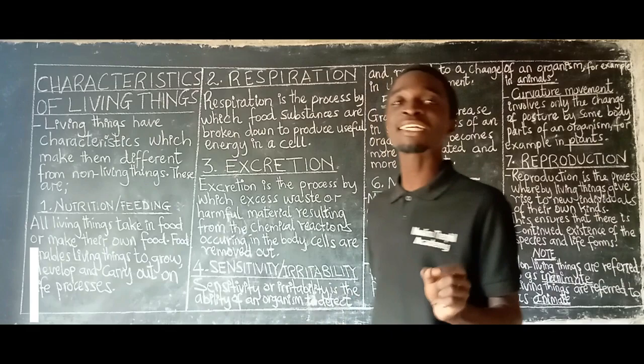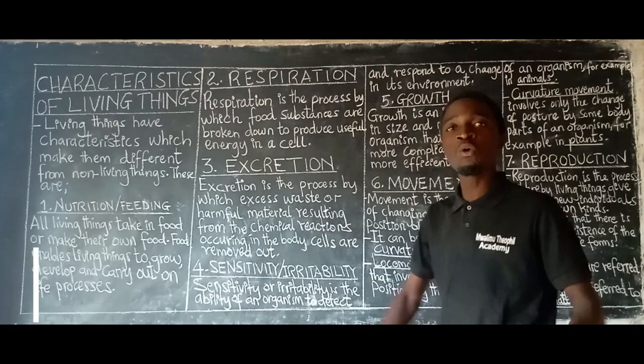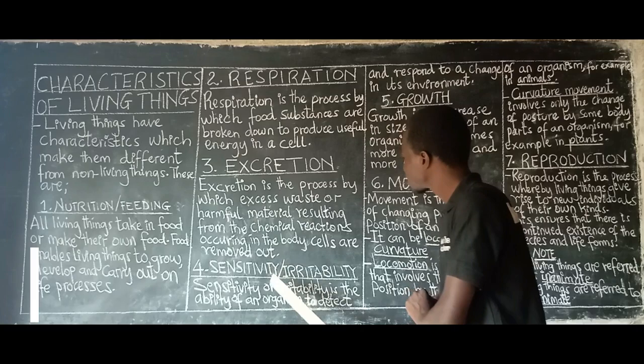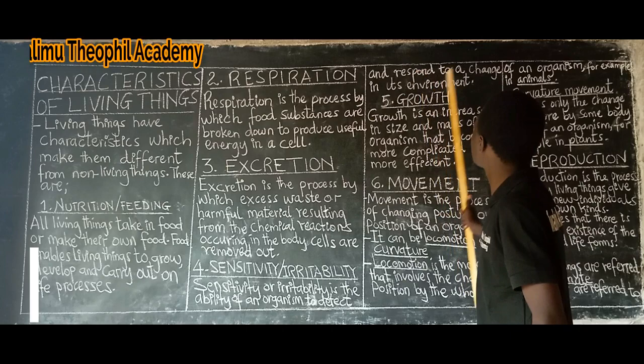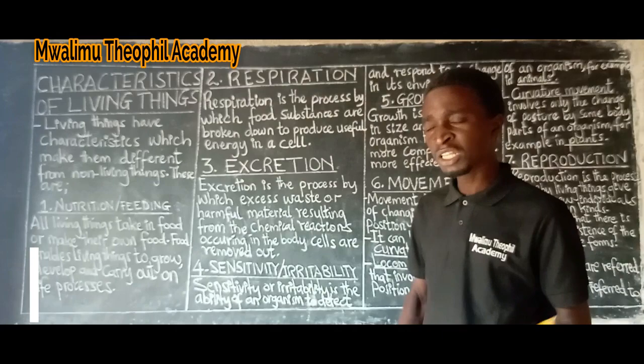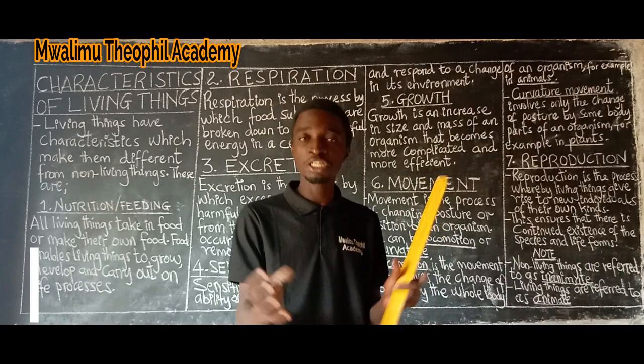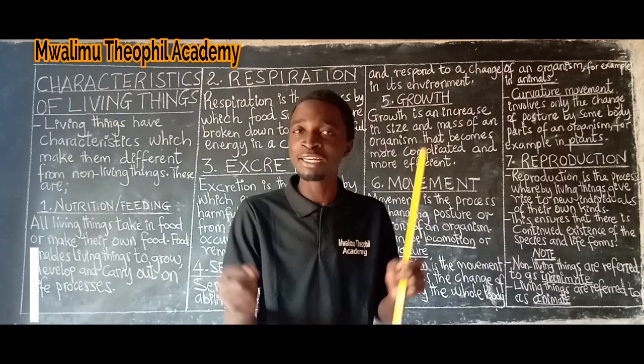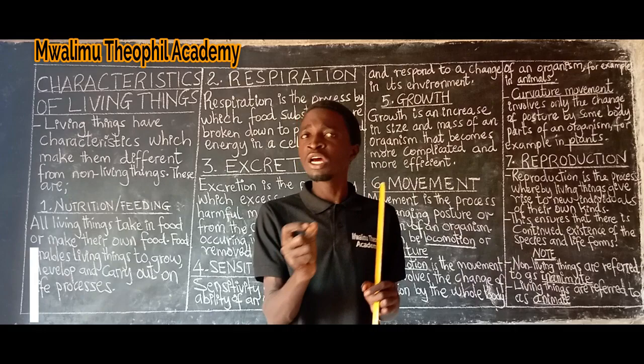The next characteristic is sensitivity or irritability. Sensitivity or irritability is the ability of an organism to detect and respond to a change in its environment. Examples of such changes include change in temperature — whether it is hot or cold.